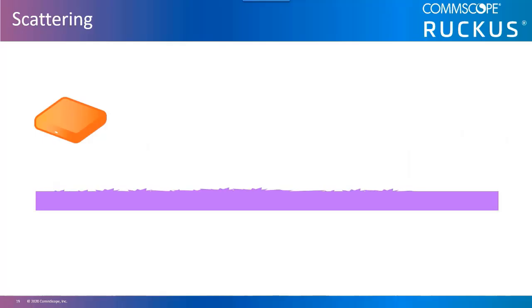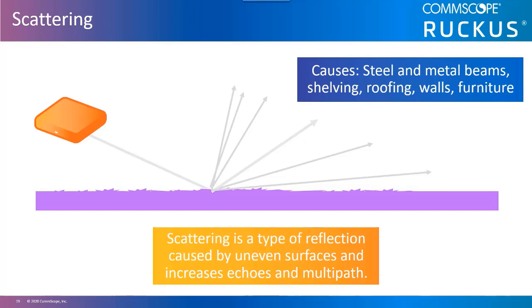Scattering occurs when an RF signal strikes an uneven surface, causing the signal to be broken up into smaller, multiple reflections of the original signal, which have less signal strength. This can happen in almost undetectable ways. If the RF signal passes through a medium that contains small particles causing the scattering, things such as rocky terrain, leafy trees, a parking lot full of cars, or even a chain link fence can cause scattering.